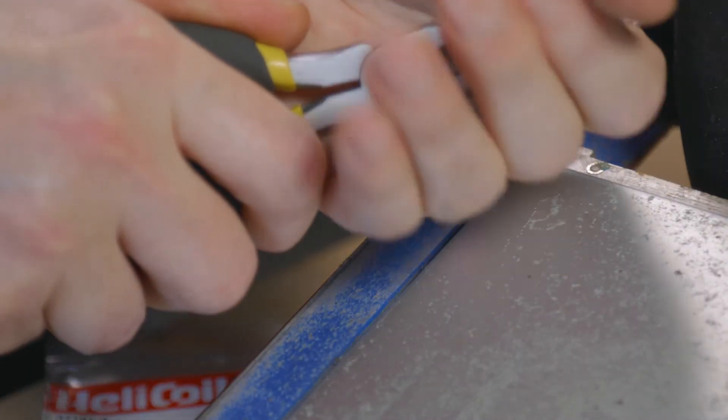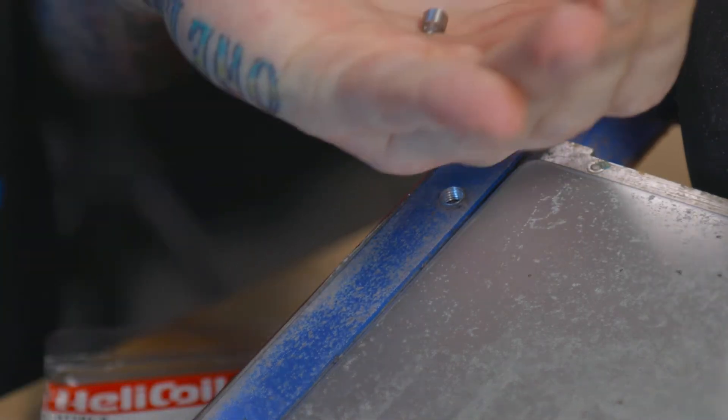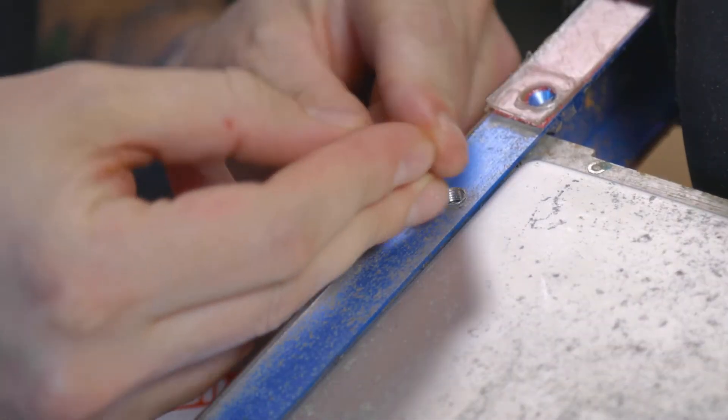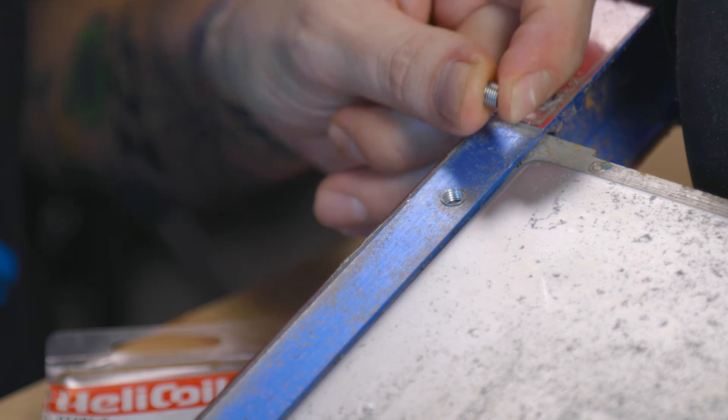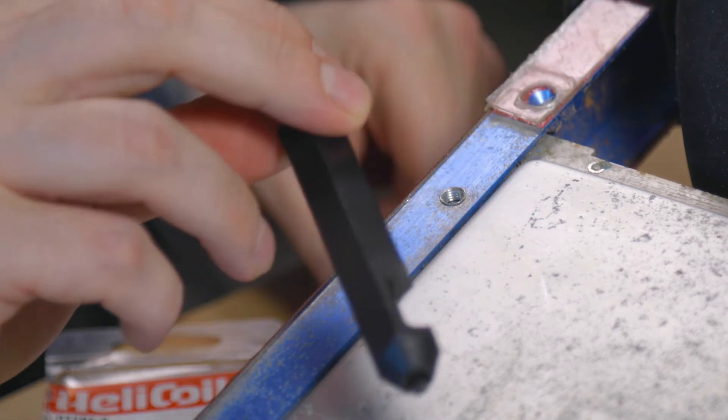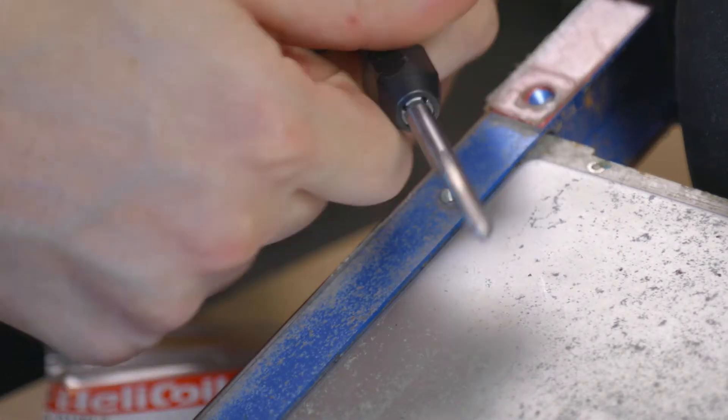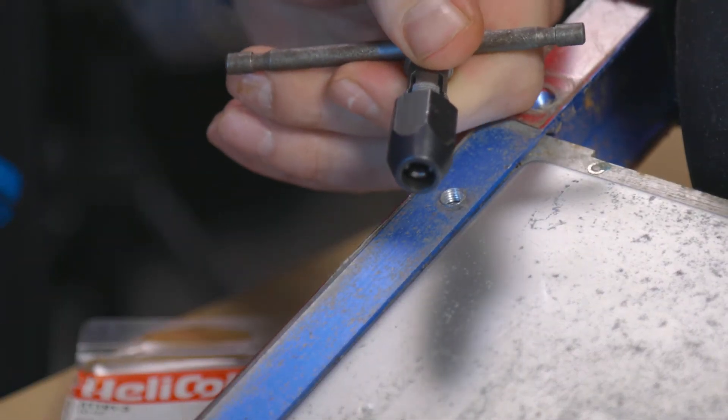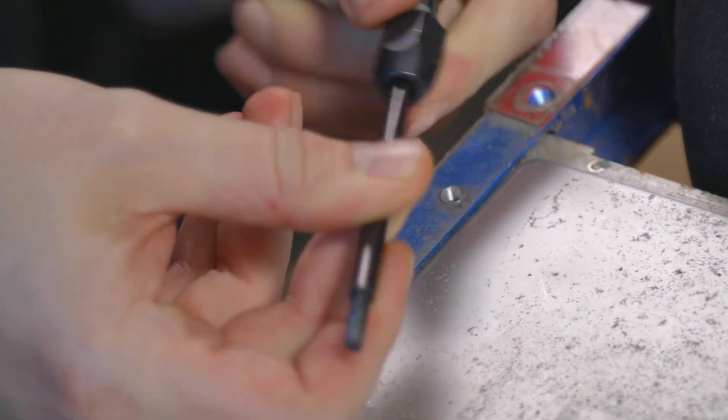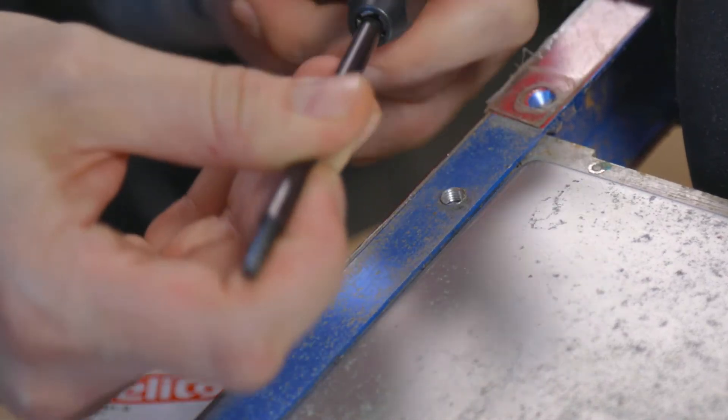This is not necessary. You don't have to do this. I just don't like how long these are. Alright so there we go. So now we want to take our insert tool. We're going to take the tap out of this handle. We're going to put the insert tool into the handle and tighten it up.